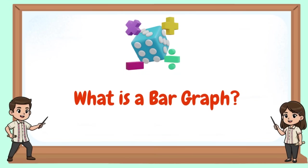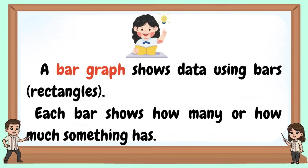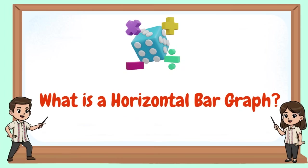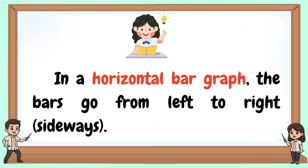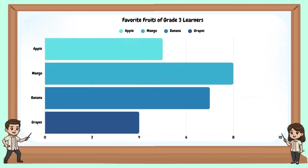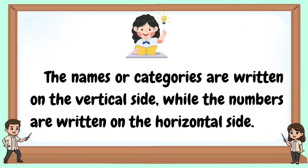We can show this information using a horizontal bar graph to make it easier to compare. A bar graph shows data using bars. Each bar shows how many or how much something has. In a horizontal bar graph, the bars go from left to right. The names or categories are written on the vertical side, while the numbers are written on the horizontal side.